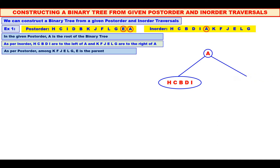We shall make E as the parent and we will mark E also in inorder. Just observe in the inorder: there are three elements K, F, J which are to the left of E, and two elements L and G to the right of E. Therefore, K, F, J should be in the left sub-tree of E, and L, G should be in the right sub-tree of E.